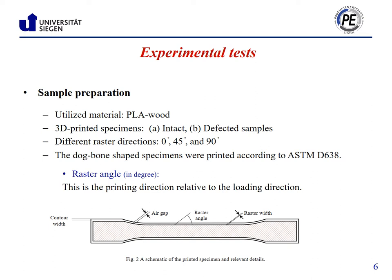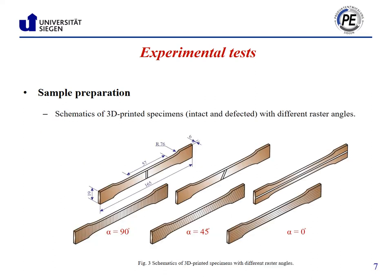By definition, raster orientation is the printing direction relative to the loading direction. Therefore, zero degree refers to specimens which are loaded in the printing direction. Intact and defected specimens were printed, as illustrated in this figure. Manufacturing defects such as voids, gaps, or overlaps can occur during fabrication; here we have considered the missing extrudate as a manufacturing defect.